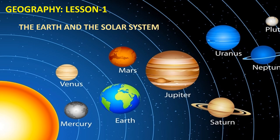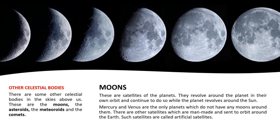Today we will learn about other celestial bodies. Moons — these are satellites of planets. Like planets are moving around the sun, satellites are moving around the planets. They revolve around planets in their own orbit, just like the planets have their own path to move around the sun.